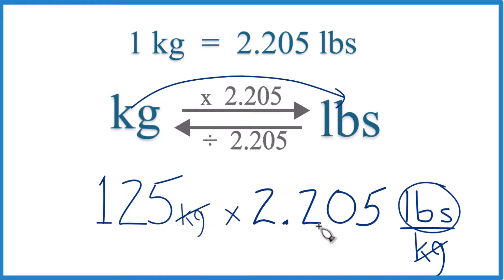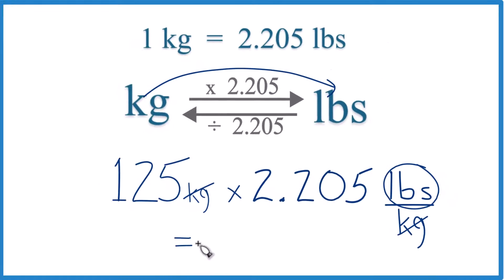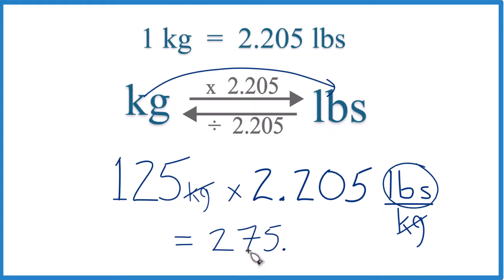125 times 2.205 pounds equals 275.625. I'm just going to round it to 275.6.